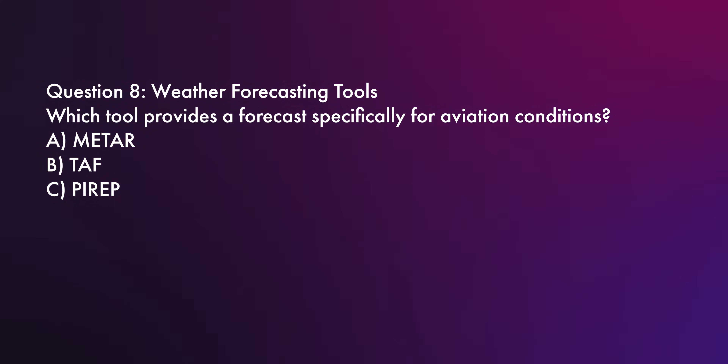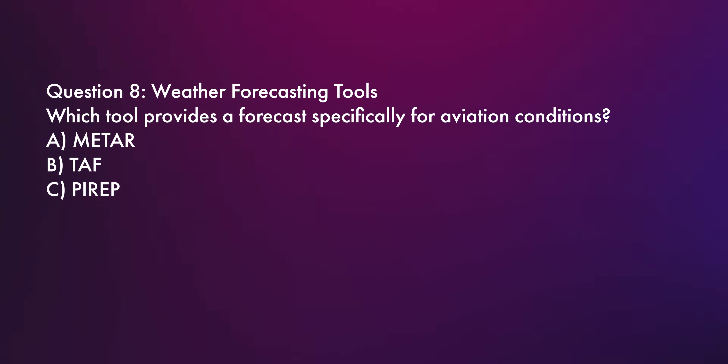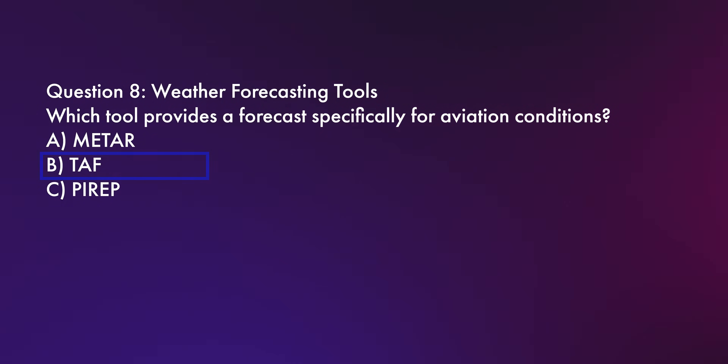Question number eight: Which tool provides a forecast specifically for aviation conditions? Is it A, METAR; B, TAF; or C, PIREP? Remember: METAR's key letter is R for real time, and TAF's key letter is F for forecast. So the answer is B, TAF. TAFs are concise weather forecasts specifically tailored for aviation, typically covering conditions within five miles of an airport. PIREPs, on the other hand, are pilot reports of observed conditions and are not predictive tools.